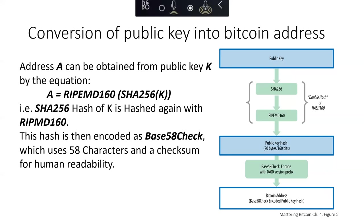We then encode Bitcoin addresses using Base58Check. Base58Check is a formatting mechanism that uses 58 characters and a checksum to help human readability, avoid ambiguity, and protect against errors. It is also used in other ways in Bitcoin whenever there is a need for a user to read and correctly transcribe a number, such as an address, a private key, or a script hash. After you encode it with Base58Check, you have your Bitcoin address that you can expose to the world.